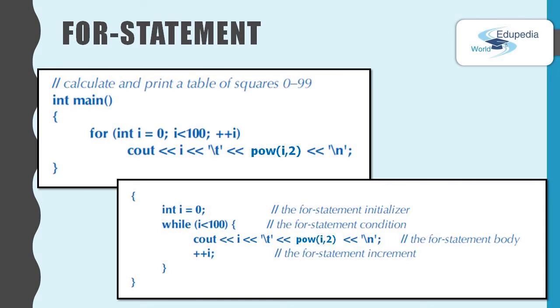The second part, i less than 100, it is the for statement condition. The third part, plus plus i, it is the for statement increment.